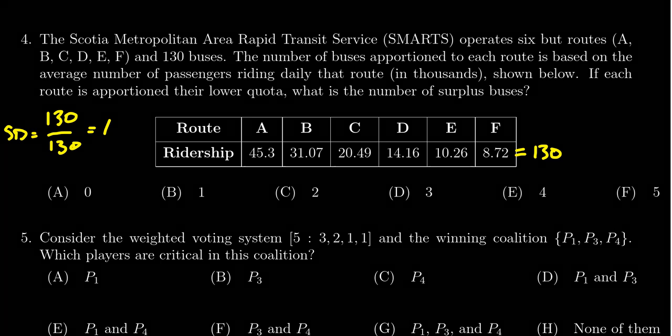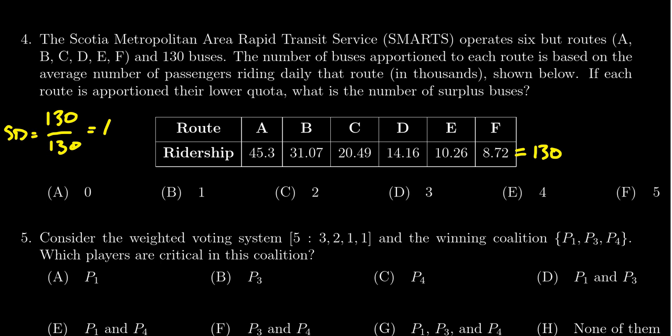And as such, we then want to do the lower quota. We are going to take each of these numbers and divide it by the standard divisor, which is just one. That just means you'll just get back the number itself.